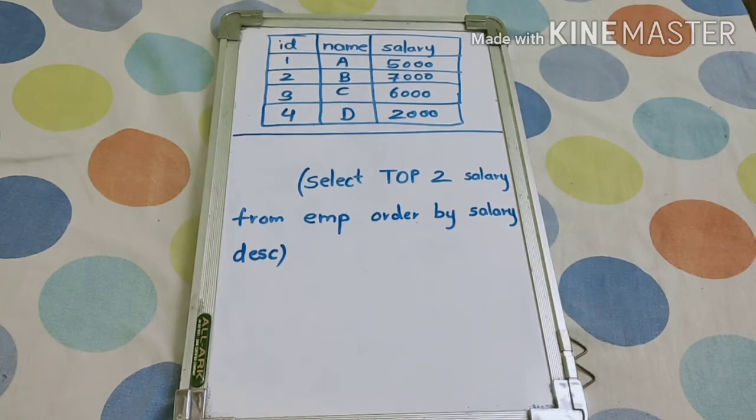That is 5000, 7000, 6000 and 2000. So suppose we have been given this question: find second highest salary, third highest salary. In generic way, like in general, how can we find? We will check that in this video.